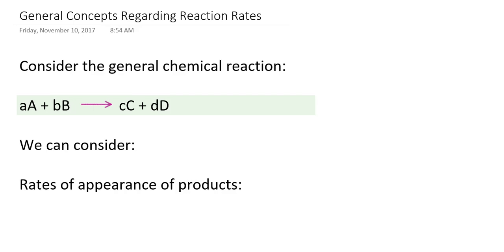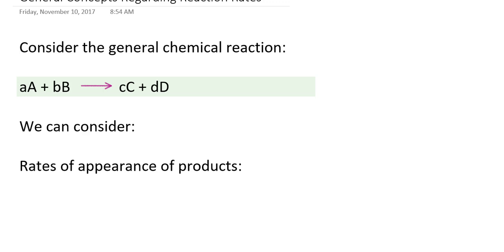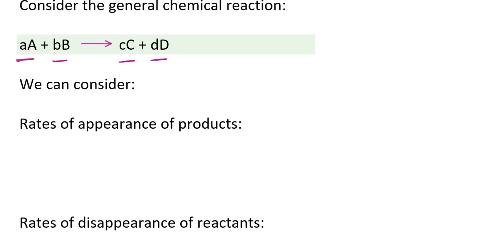So let's first develop a few conventions. Suppose for a generic chemical reaction like the one I'm showing you on this slide, where I am reacting A moles of A with B moles of B, and that's going to give me C moles of C and D moles of D. We can write shorthand mathematical notation to represent rates of appearance of products as well as rates of disappearance of reactants, and the way that mathematical set of symbols comes together is the following.